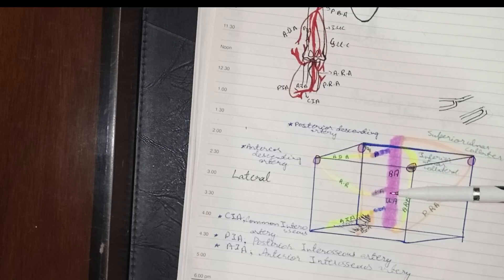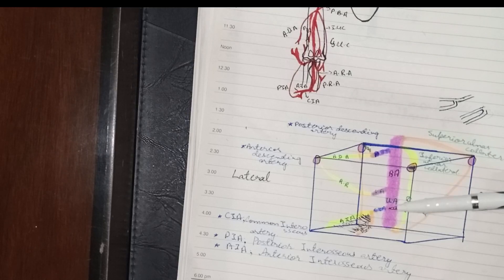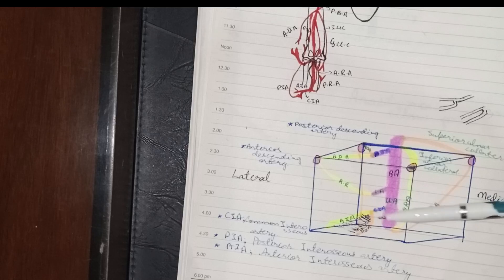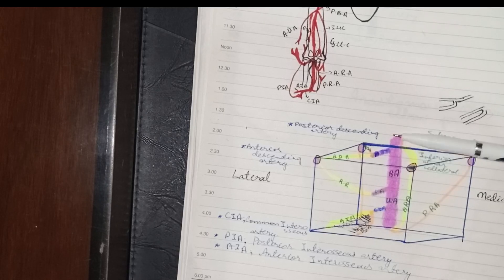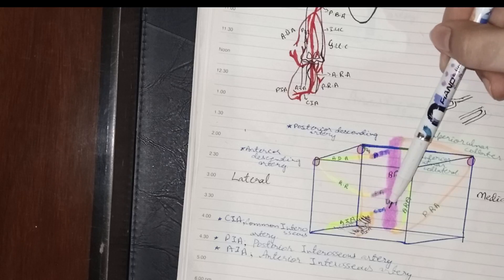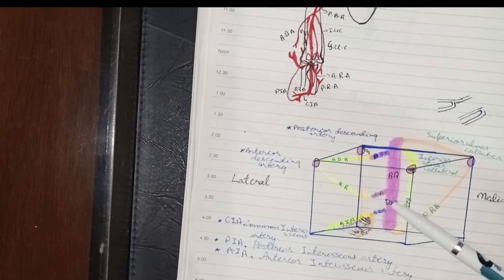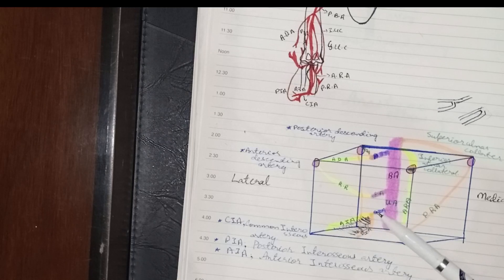The brachial artery moves further and divides at the level of the cubital fossa into the radial artery and the ulnar artery. The radial artery is smaller and the ulnar artery is larger. The ulnar artery gives off the common interosseous artery, which further divides into the posterior interosseous artery and the anterior interosseous artery.